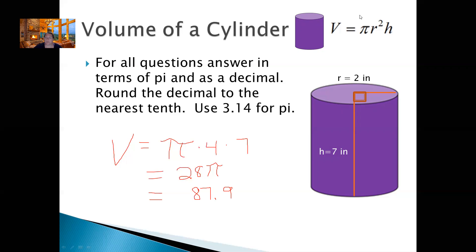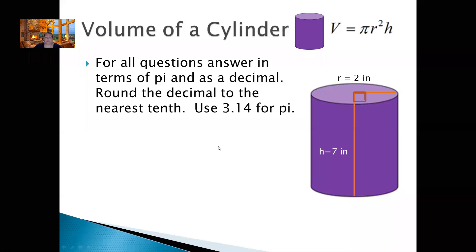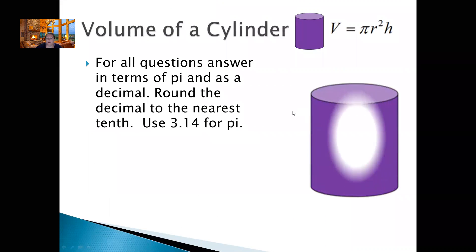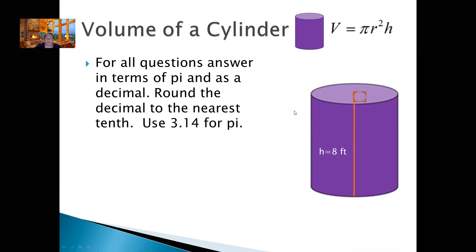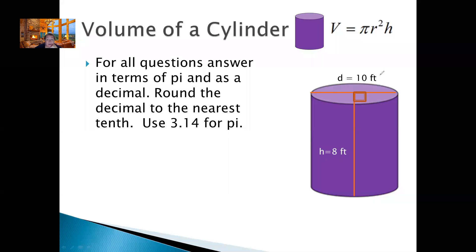Alright, the next one I want you to try by yourself — maybe you can pause the video and try to do it. So let's find the height and the radius: the height is 8 and the diameter is 10. Pause this video, try to plug everything in and figure it out, and then unpause it to see if you got it right. Welcome back. The first thing you should have noticed is that they give you the diameter, which is 10, and we need to find the radius. Hopefully you divided it by 2 to get r equals 5.